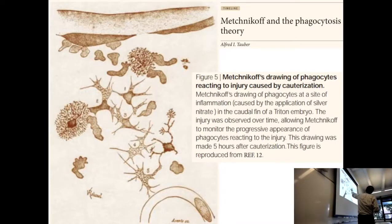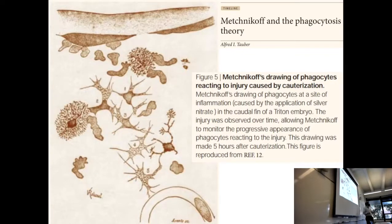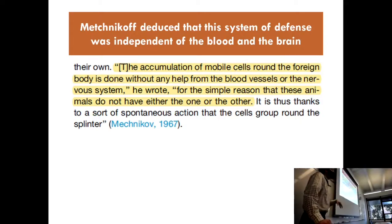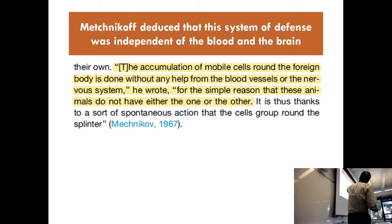He started injuring the starfish by splinters and cauterization and observed certain cells that would respond to wounds. Five hours after cauterization, cells looked like a tree — he called them dendritic cells. These come down in some cases to macrophages, which are still a major type of immune cell. Metchnikov figured out this system was independent of the blood and independent of the brain — literally a new system with its own roads. The blood vessels are roads for blood; this was independent of them.